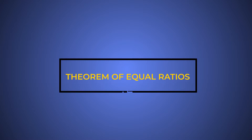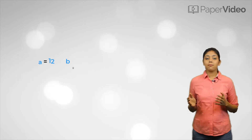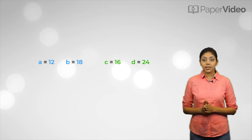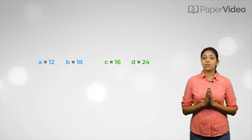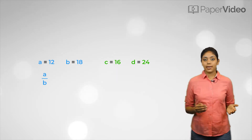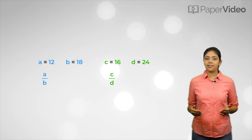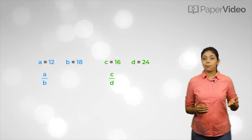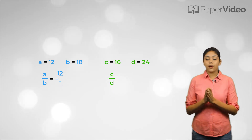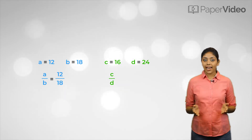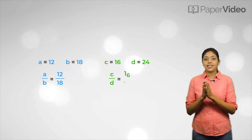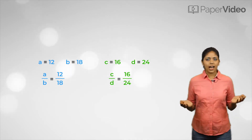Theorem of Equal Ratios. Let us consider a, b, c, and d as the given values. From these values, let us consider two ratios: a upon b and c upon d. We can see that a upon b is equal to 12 upon 18 and c upon d is equal to 16 upon 24. Are they equal?